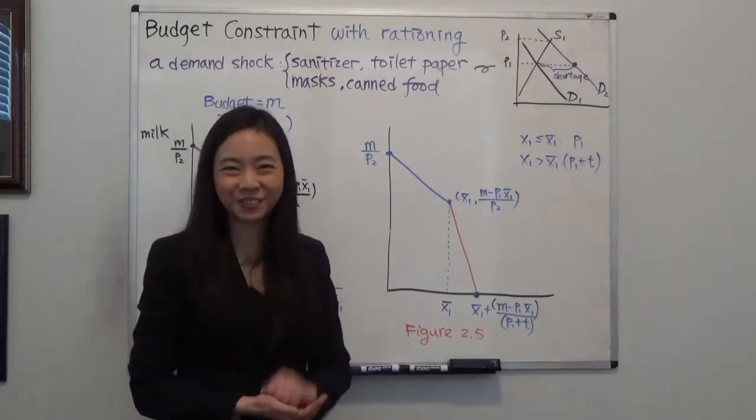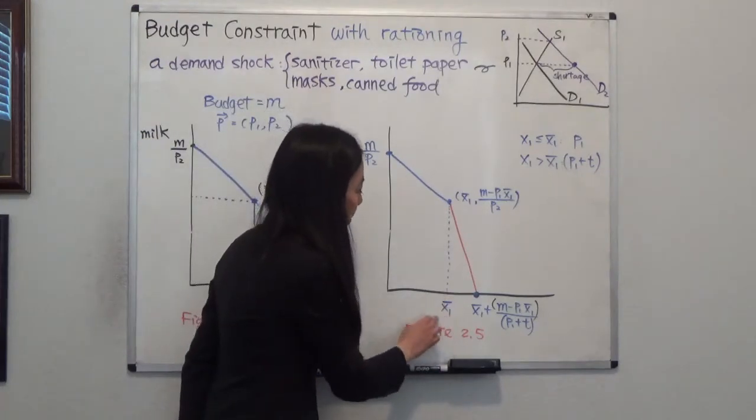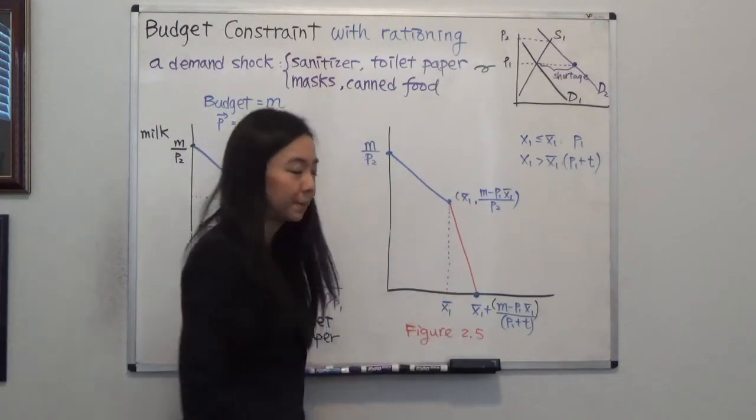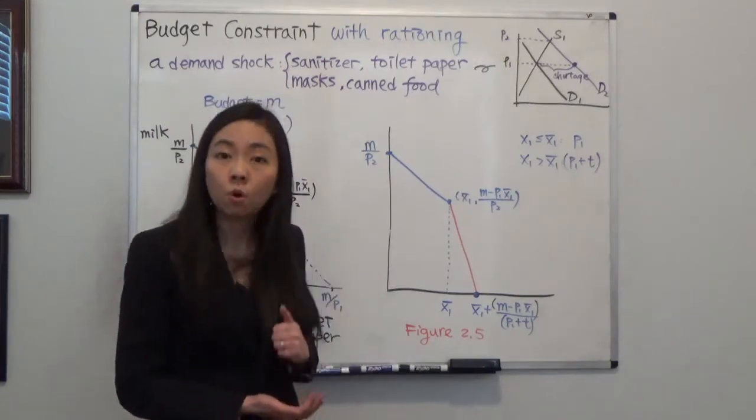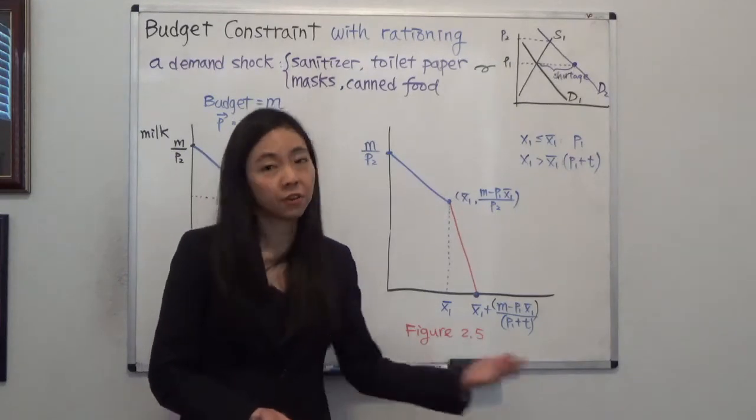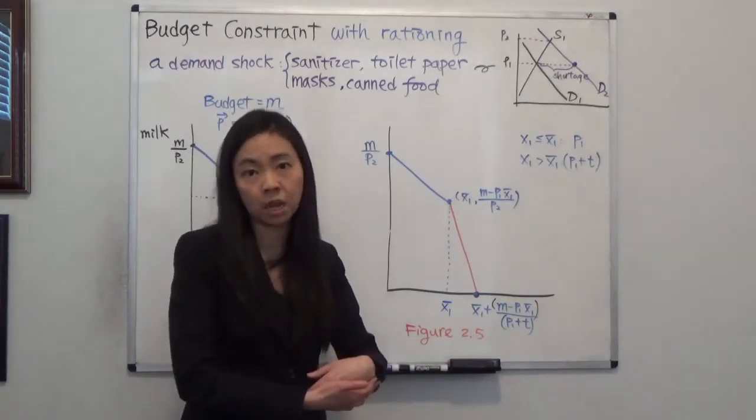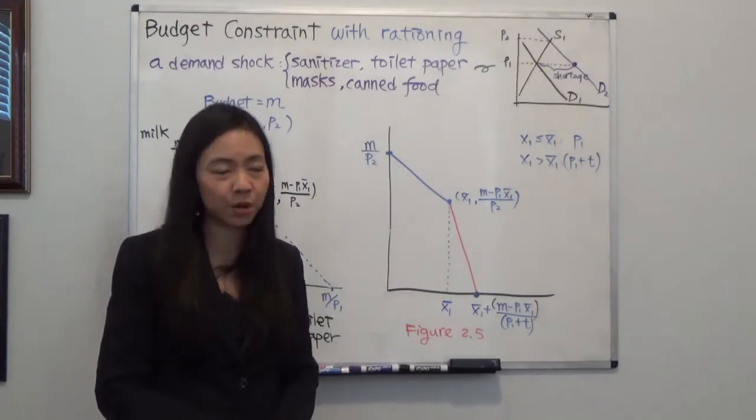And another method is this. The shop will say, you can buy a maximum of x bar rows of toilet paper at the original price P1. But if you want to buy even more, meaning if you're inconsiderate of other families, you want to stock up on toilet paper, that's fine. But you will have to pay a much much higher price than P1.